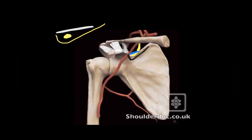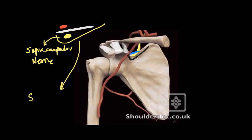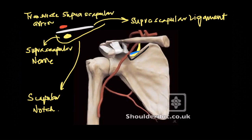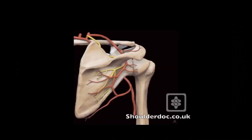Let's draw this from the side for a better understanding. Here I've drawn the suprascapular notch, with the suprascapular nerve sitting on top of it. The nerve is covered by the suprascapular ligament, also known as the transverse scapular ligament. The artery that accompanies the nerve is the transverse suprascapular artery, and it generally lies above the ligament.